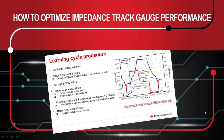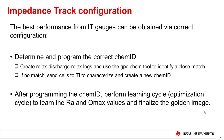In this presentation, we will be focusing on how to configure a gauge to obtain the best performance from it. The best performance from impedance track gauges can only be obtained by correct configuration. The two major steps in configuring a gauge are programming the correct ChemID and performing a learning cycle.